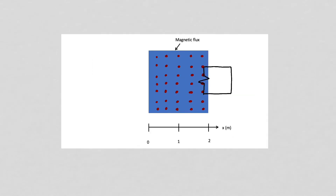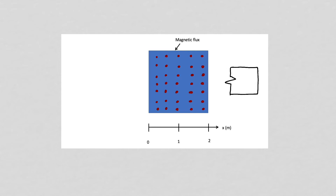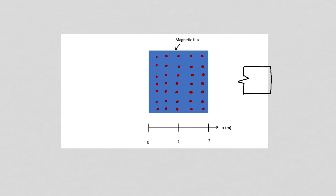Once the circuit moves out of the magnetic field region, there is no longer any change in the magnetic flux through our circuit, and so there is no induced current.